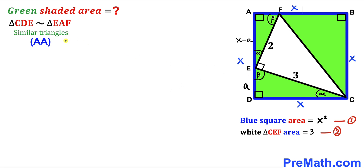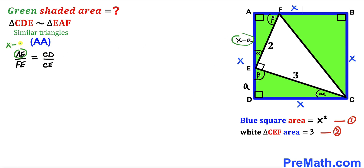By the angle-angle similarity theorem, these triangles are similar. We set up the proportion: AE divided by FE equals CD divided by CE. AE is x minus a, FE is 2, CD is x, and CE is 3, giving us (x − a)/2 = x/3.